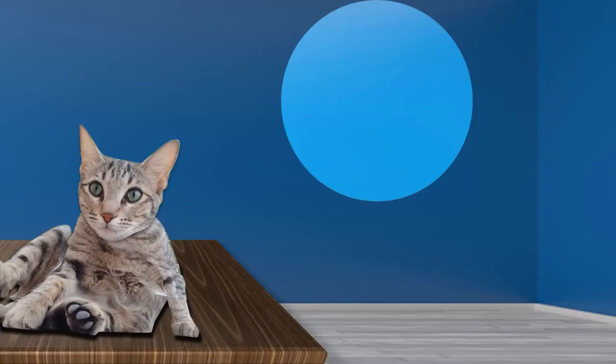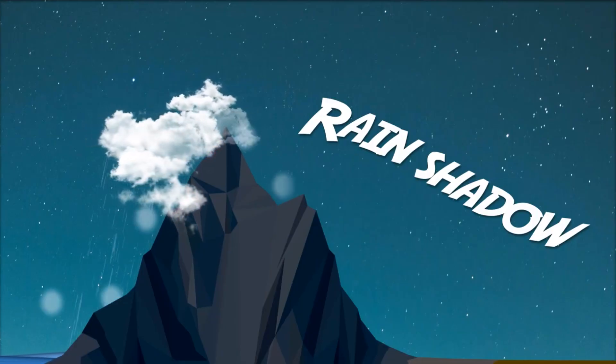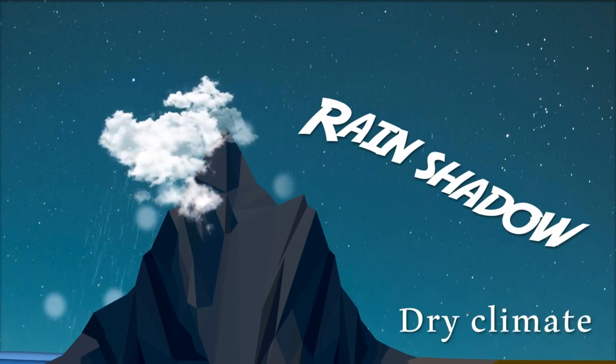Since like shadows occur when light is intercepted by an object, this pocket of dry climate is created by mountains intercepting rain and creating a shadow of dry climate.